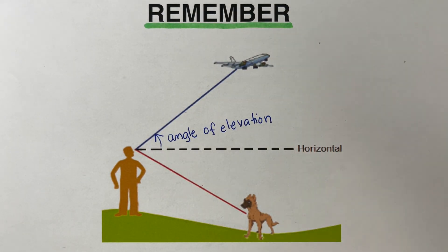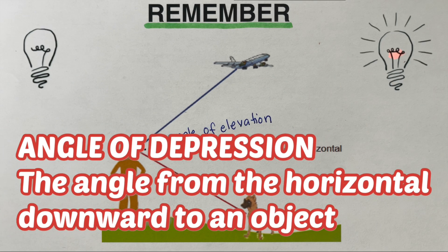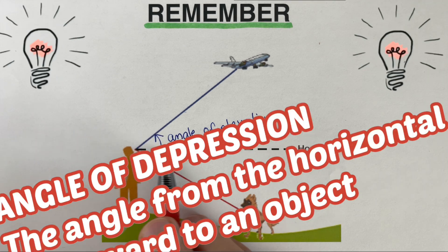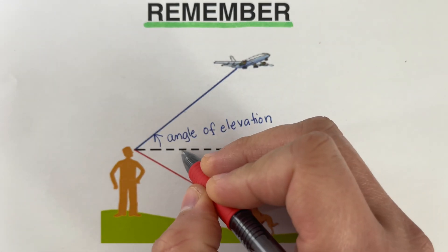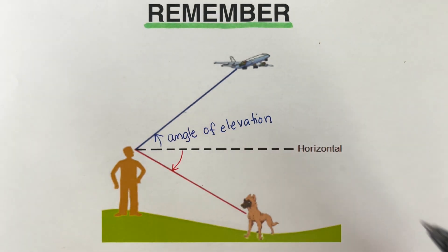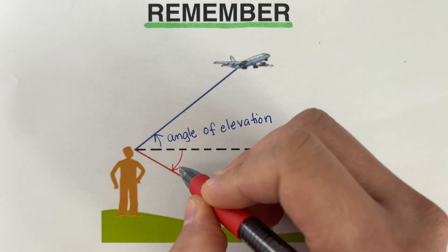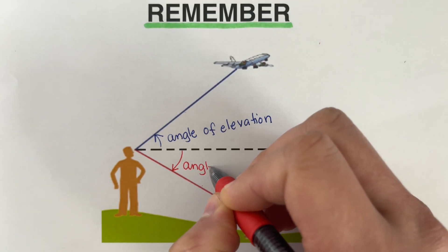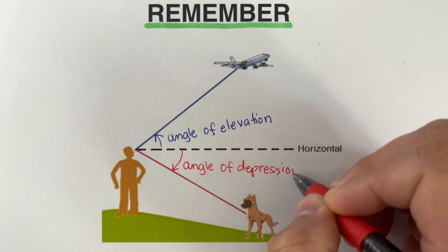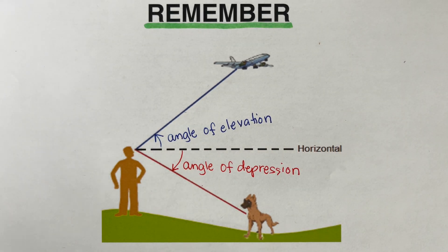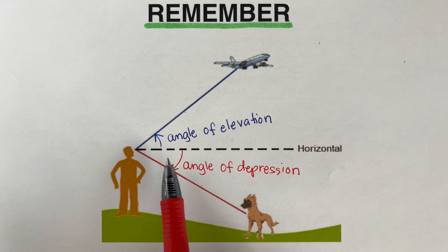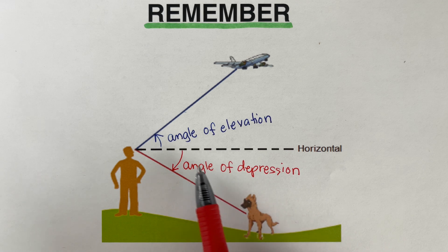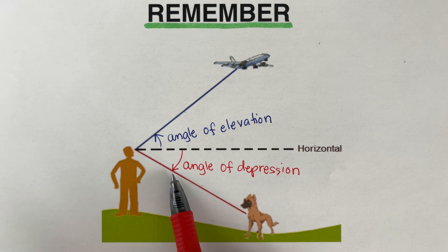On the other hand, the angle of depression is defined as the angle from the horizontal downward to an object. If we draw an angle on this corner directed downward, we call this the angle of depression. To wrap it up: angle of elevation is the angle going up from the horizontal, while angle of depression is the angle downward from the horizontal.